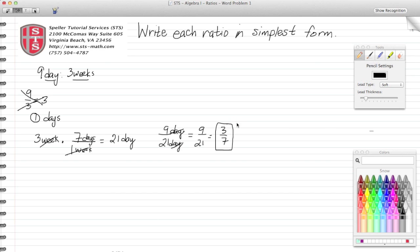My other option is to convert everything to weeks. So I'm going to begin with nine days, again multiplying by some conversion. Since I want to get rid of days, I know that days has to be my denominator.